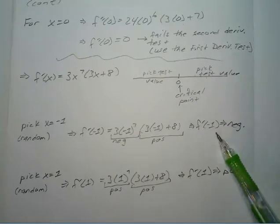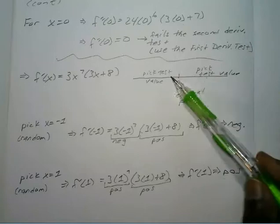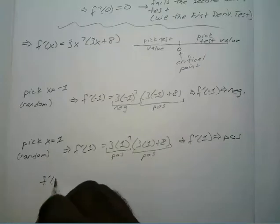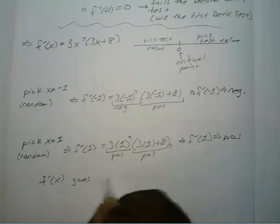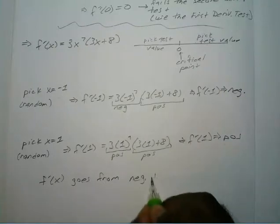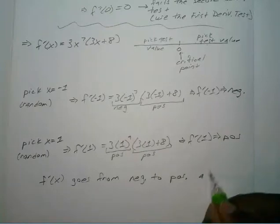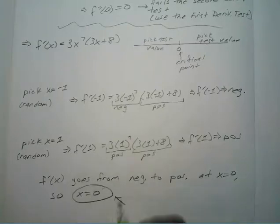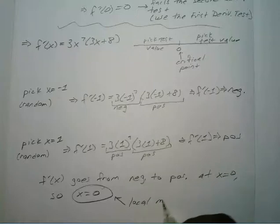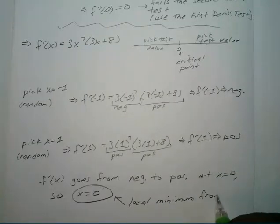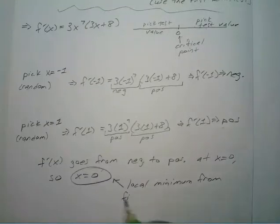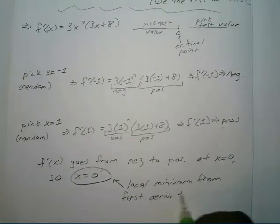It goes from negative to positive on both sides of that critical point. Since f prime of x goes from negative to positive at x equals 0, we know that x equals 0 is your local minimum — from the first derivative test.